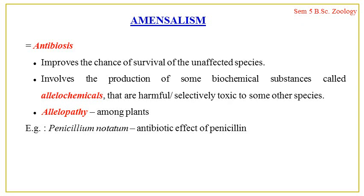This interaction involves the production of some biochemical substances by one species that are harmful to others. These chemicals produced during the interaction are known as allelochemicals. The production of chemicals into the external environment modifies the environment, and the species which produces the chemical gets benefited by improving its own chance of survival. During amensalism, one species produces certain biochemical substances into the environment, which modifies the environment and affects the other species adversely, harming it.